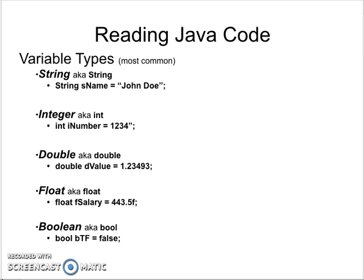A string is something that is contained inside quotes. A string can be any alphanumeric character — it can be a number, a symbol, a letter, or a group of letters. They must be contained inside of double quotes in order to be a string.